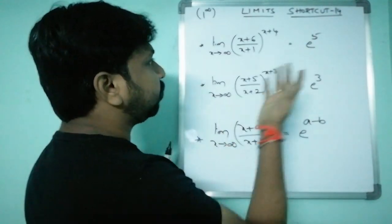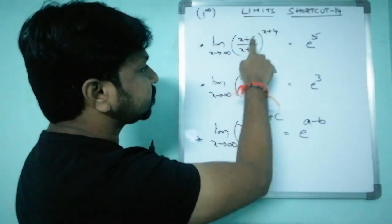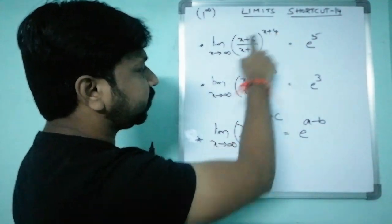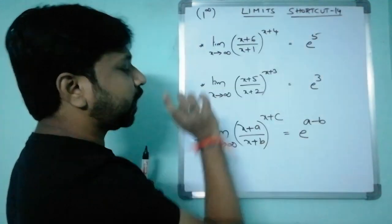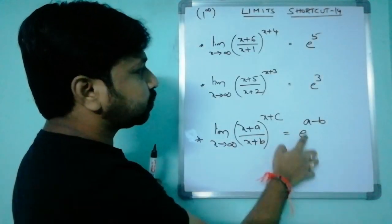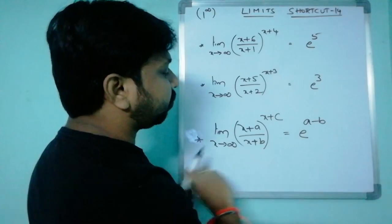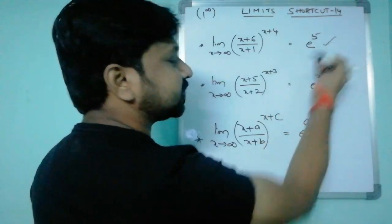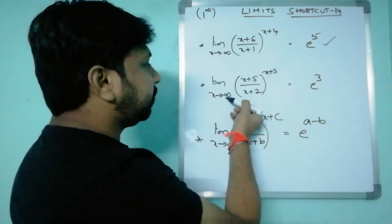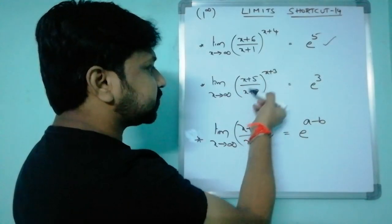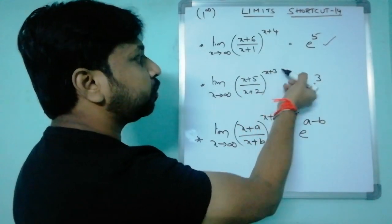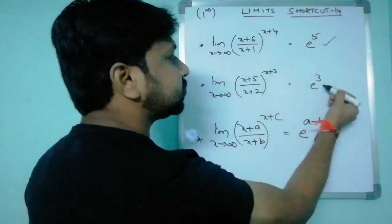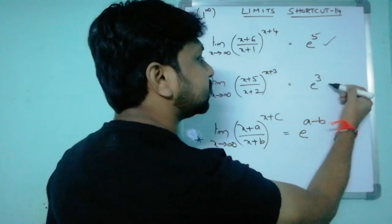Applying the formula: for limit x→∞ of (x+6)/(x+1) whole power (x+4), e to the power of (6−1) = e^5. Finished. Next: limit x→∞ of (x+5)/(x+2) whole power (x+3), that is e to the power of (5−2) = e^3.